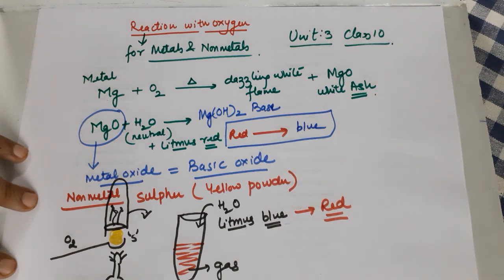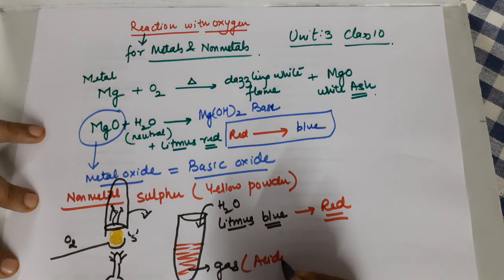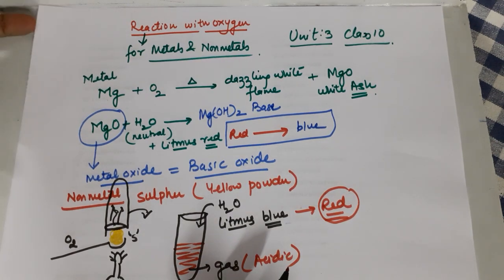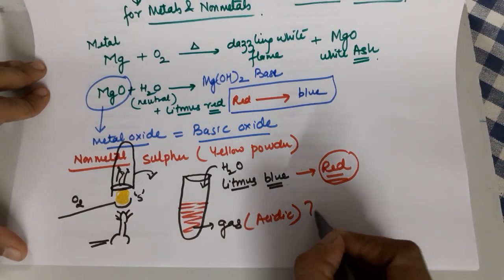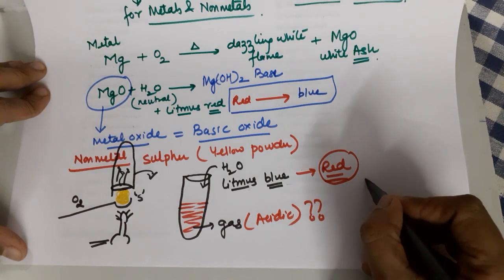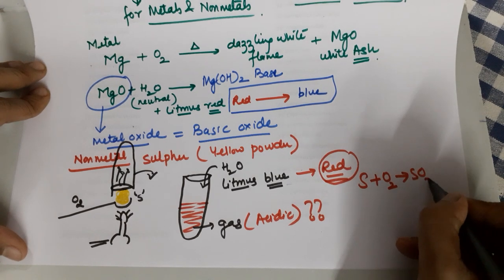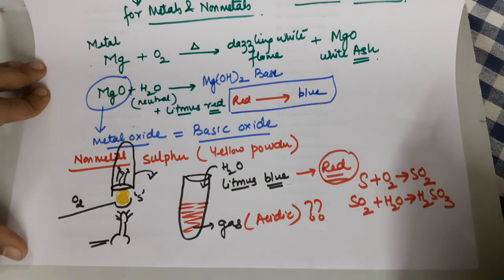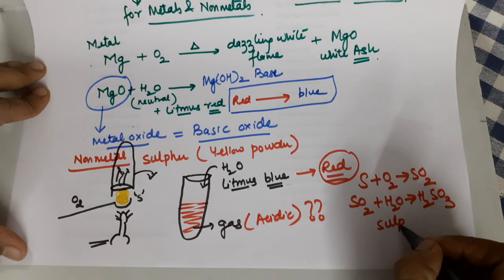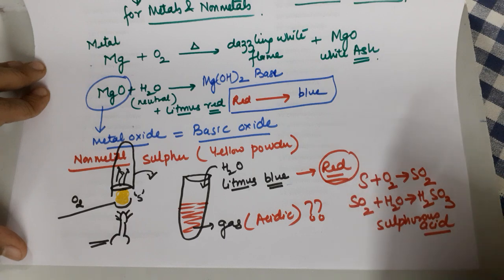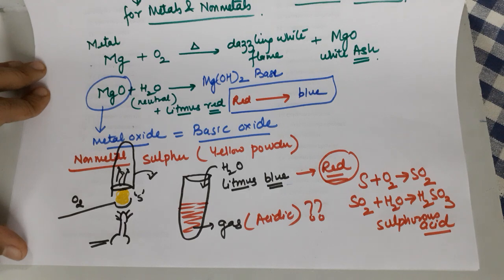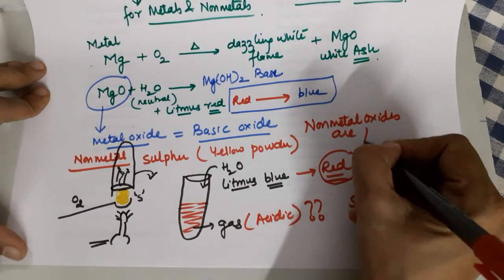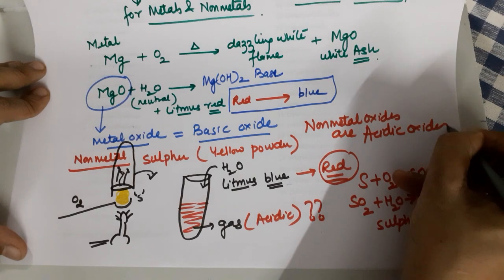You observe that your solution turns red. The conclusion is that this gas is acidic, because addition of water and litmus made it turn from blue to red. Sulfur combines with oxygen to form sulfur dioxide (SO₂). This SO₂ then dissolves in water to form sulfurous acid (H₂SO₃). This sulfurous acid is the cause of litmus turning from blue to red. We conclude that nonmetal oxides are acidic oxides.